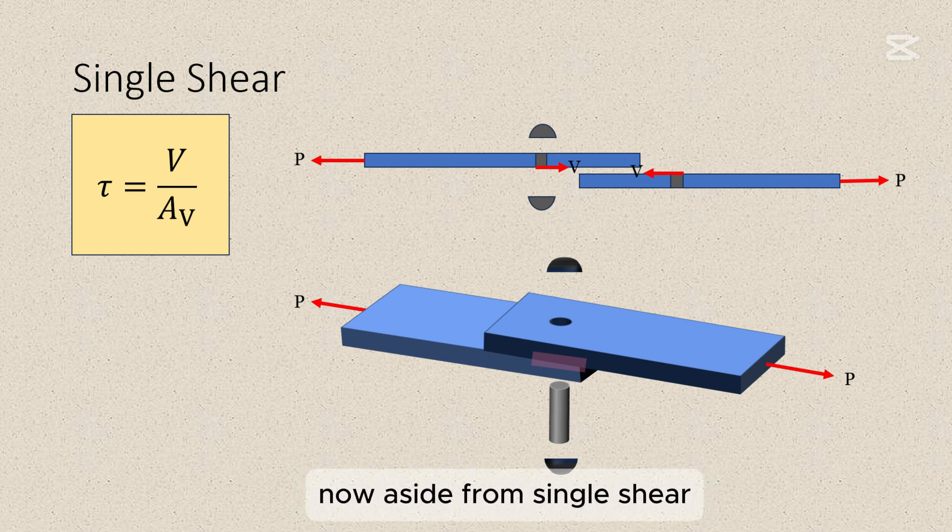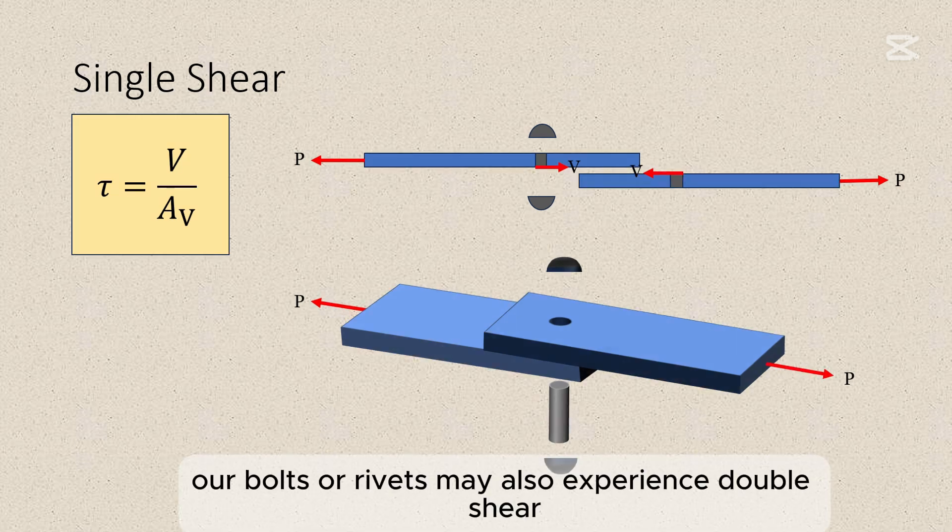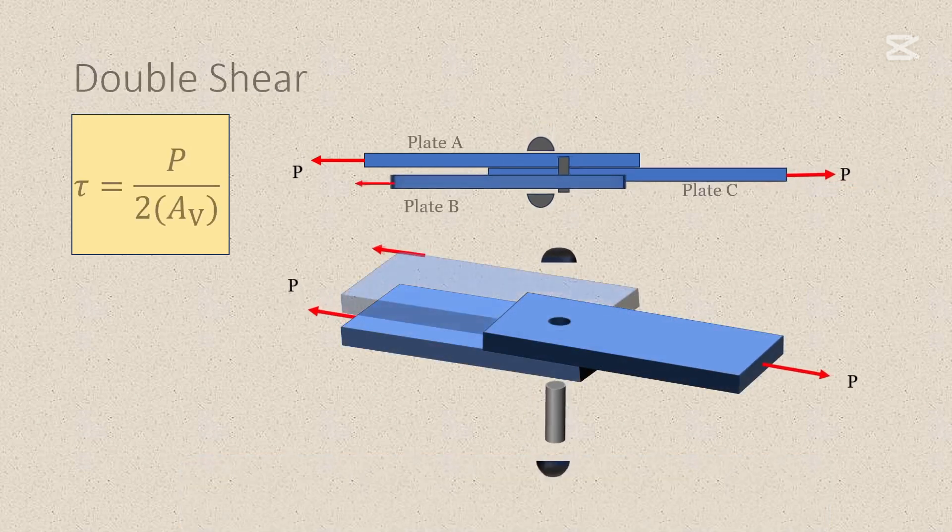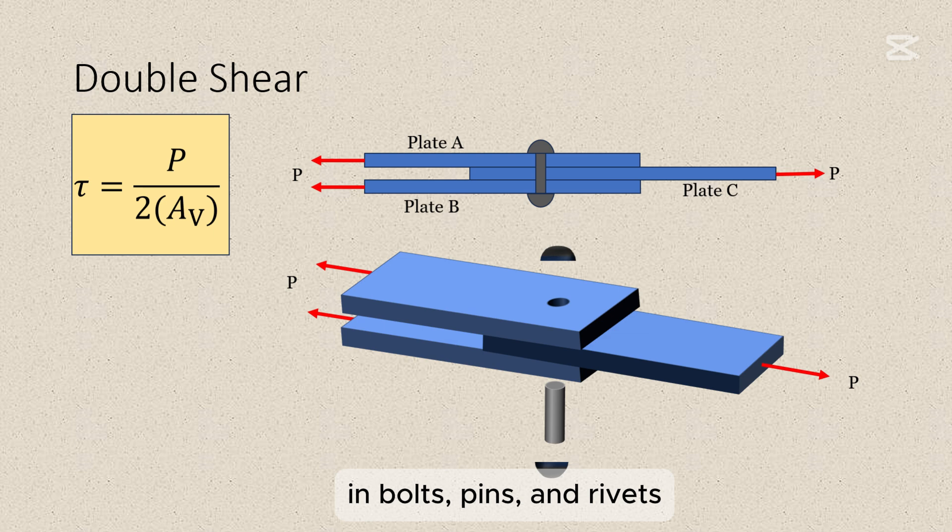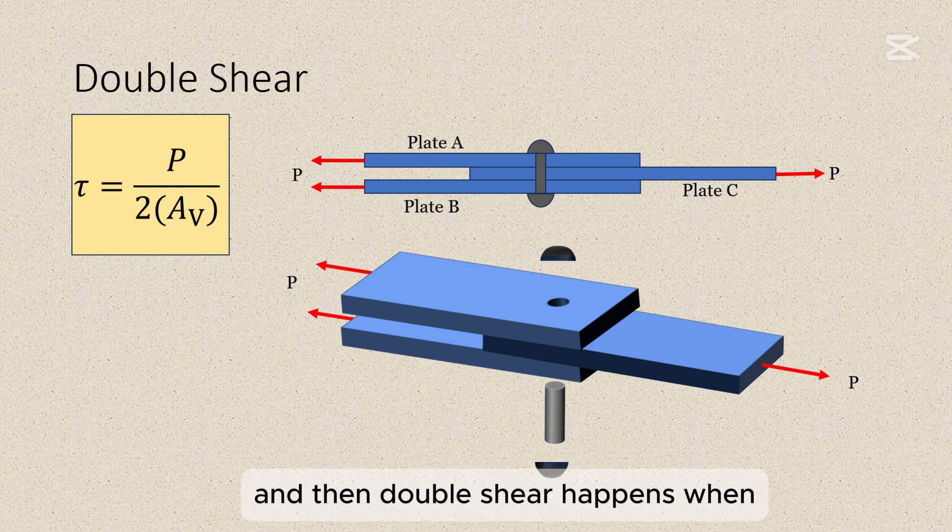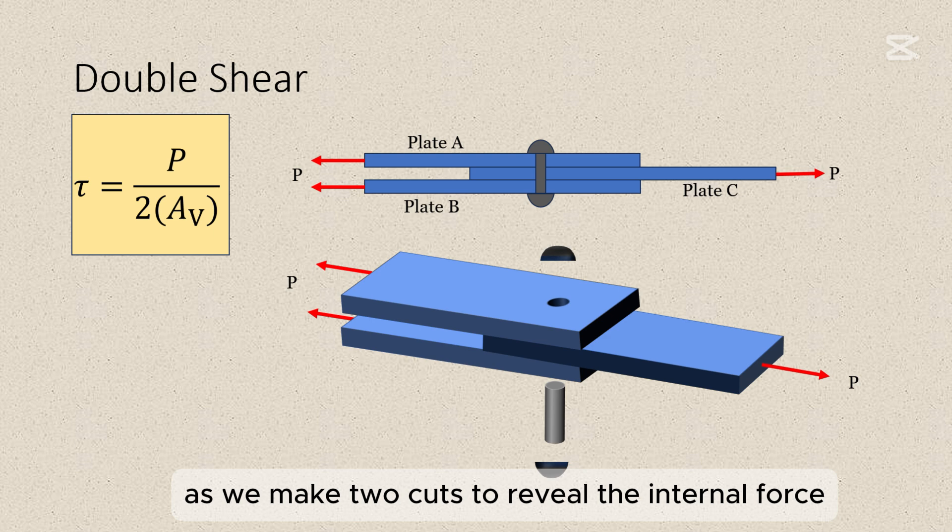Now aside from single shear, our bolts or rivets may also experience double shear. Essentially, shearing stresses are commonly found in bolts, pins, and rivets used to connect various structural members and also machine components. And then double shear happens when, as we make two cuts to reveal the internal force in our bolt, there will be two resisting areas.